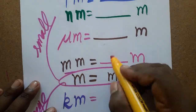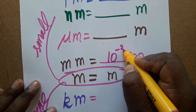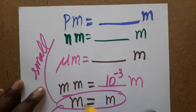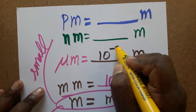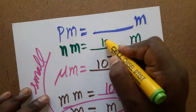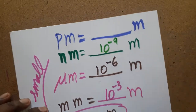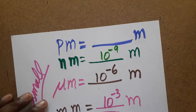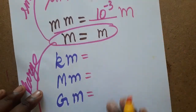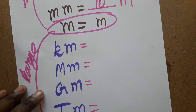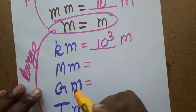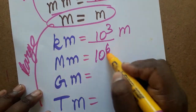For small values: millimeter is 10 power minus 3 meter, micrometer is 10 power minus 6 meter, nanometer is 10 power minus 9 meter, and picometer is 10 power minus 12 meter. For larger values: kilometer is 10 power 3 meter, and megameter is 10 power 6 meter.